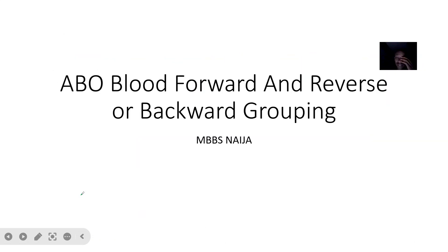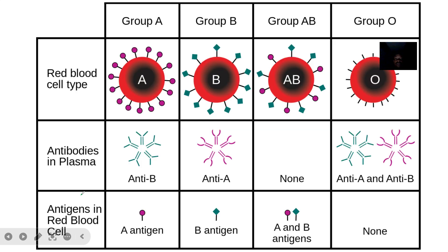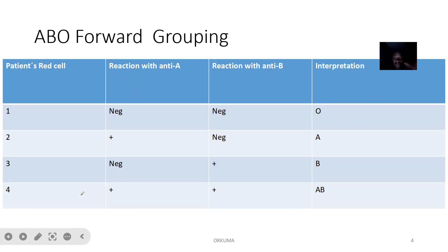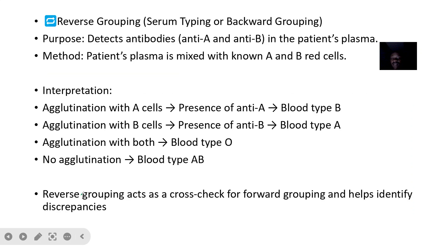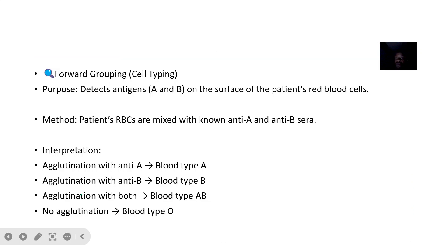Let's look at the possible results you might get when doing ABO blood grouping in the forward way and also ABO blood grouping in the backward or reverse way. These are all possible results we've already discussed. So let's have an overview before we come back to the summaries.